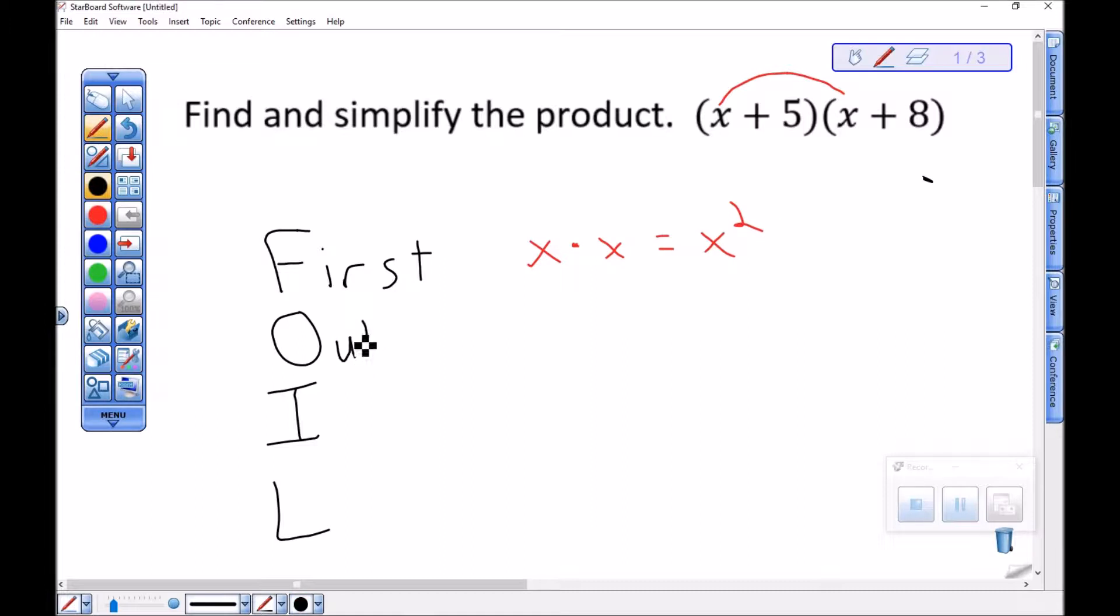Then the product of the outside terms. So those are the two that are farthest from each other, which is x times 8, which would be 8x.